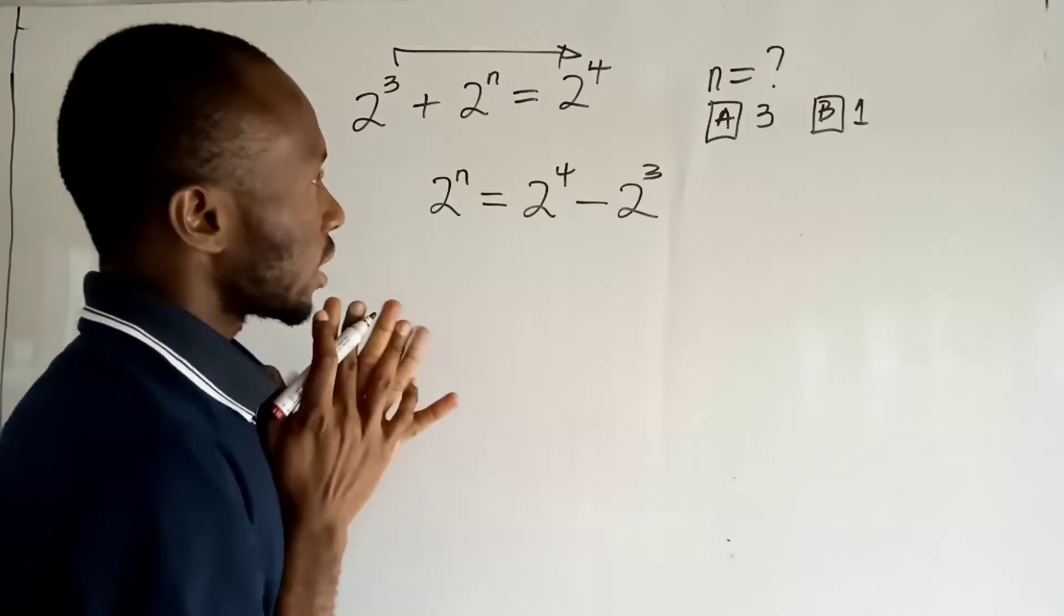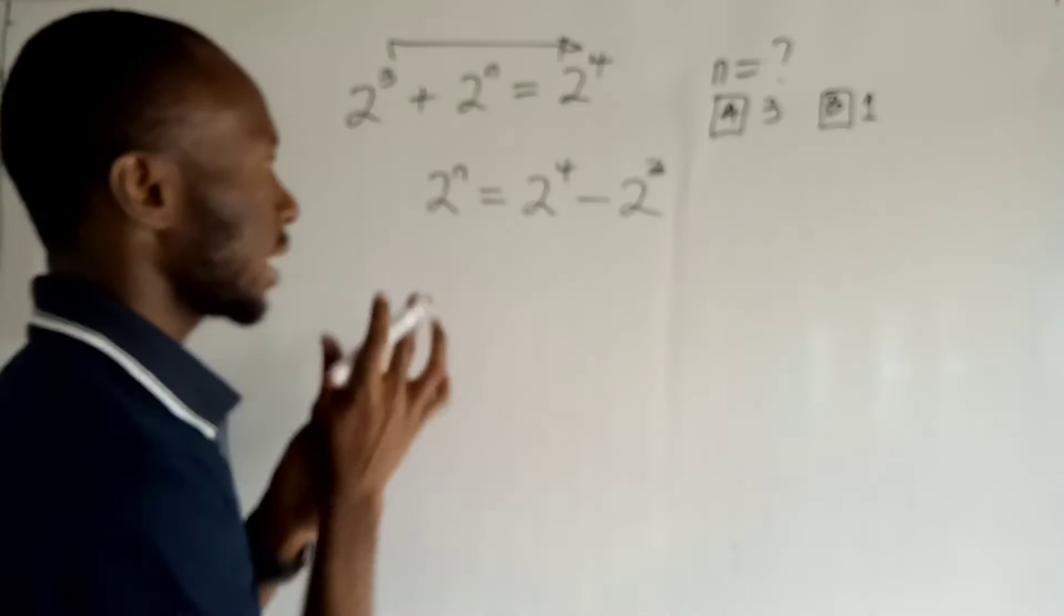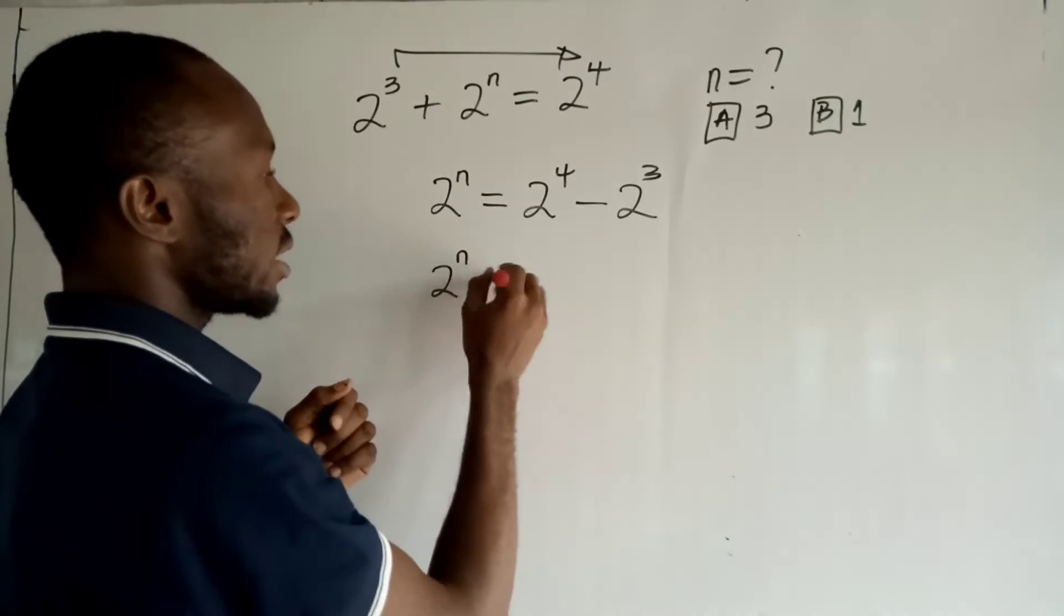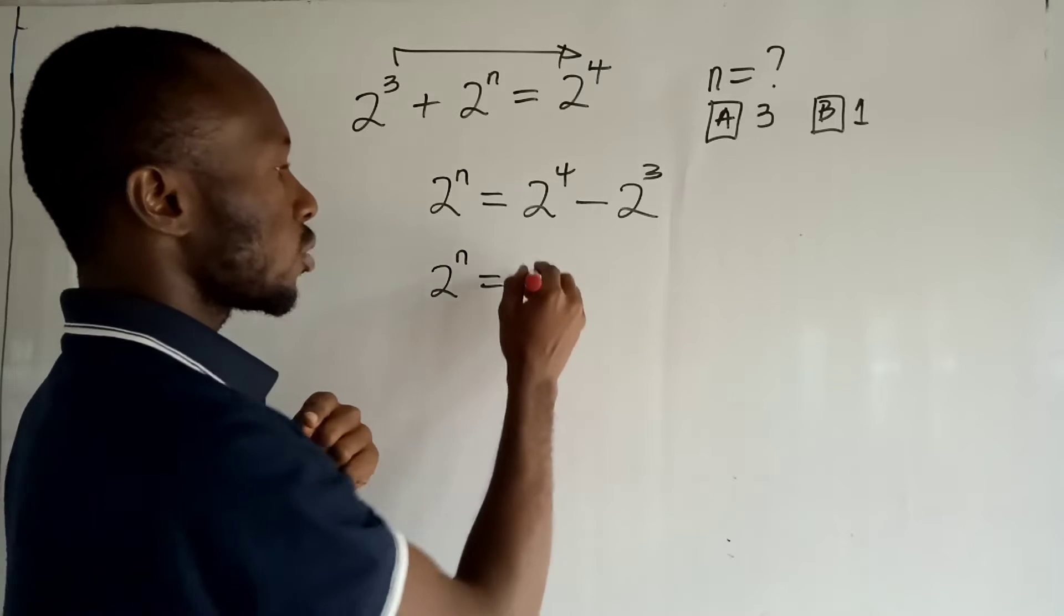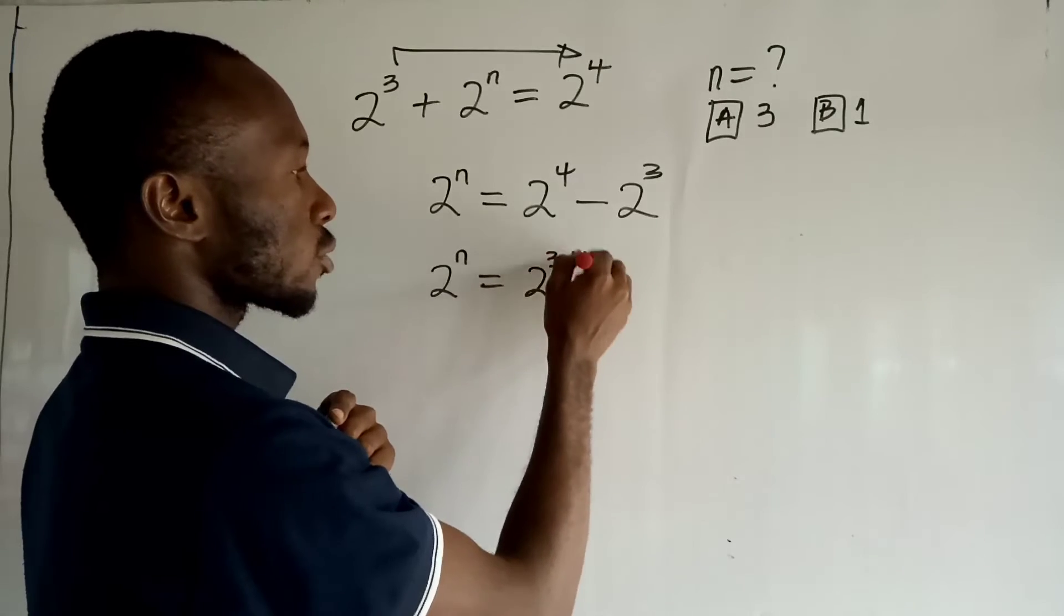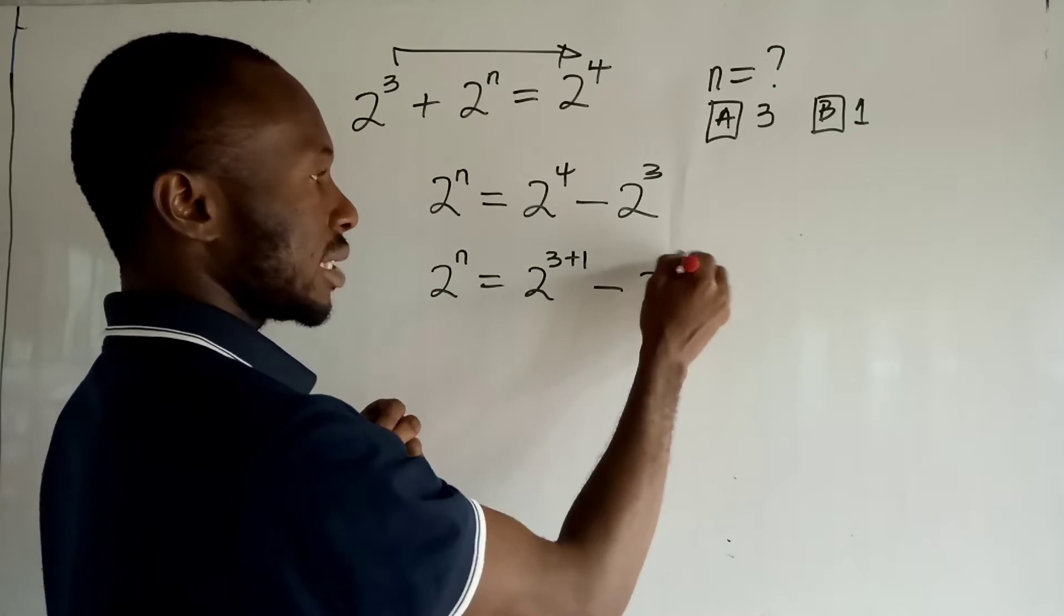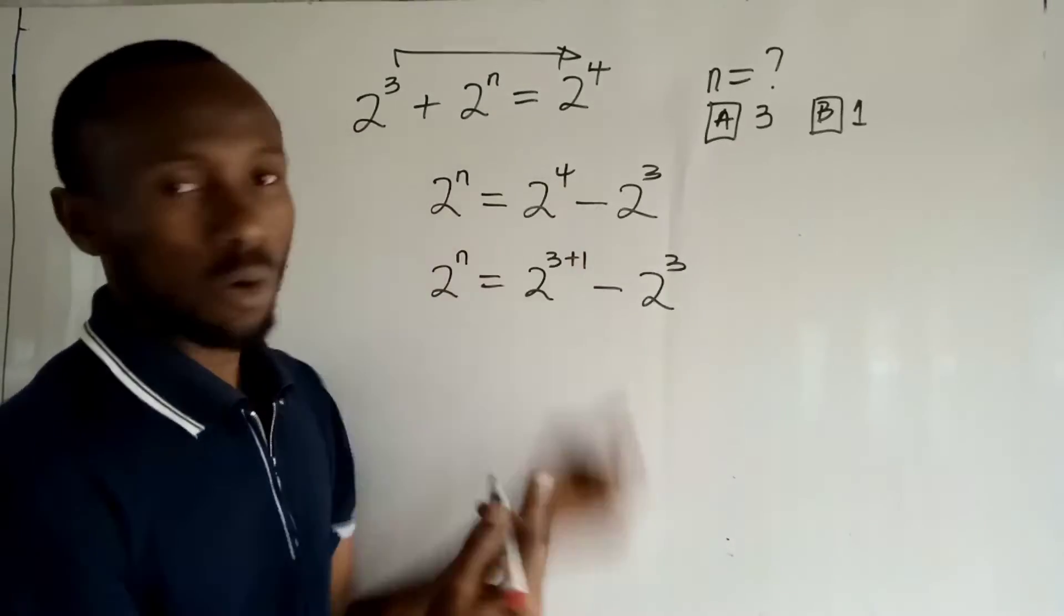Very true. Now the next thing you want to do, you can say 2 to the power n is equal to 2 to the power 3 plus 1 minus 2 to the power 3, because 3 plus 1 is equal to 4.